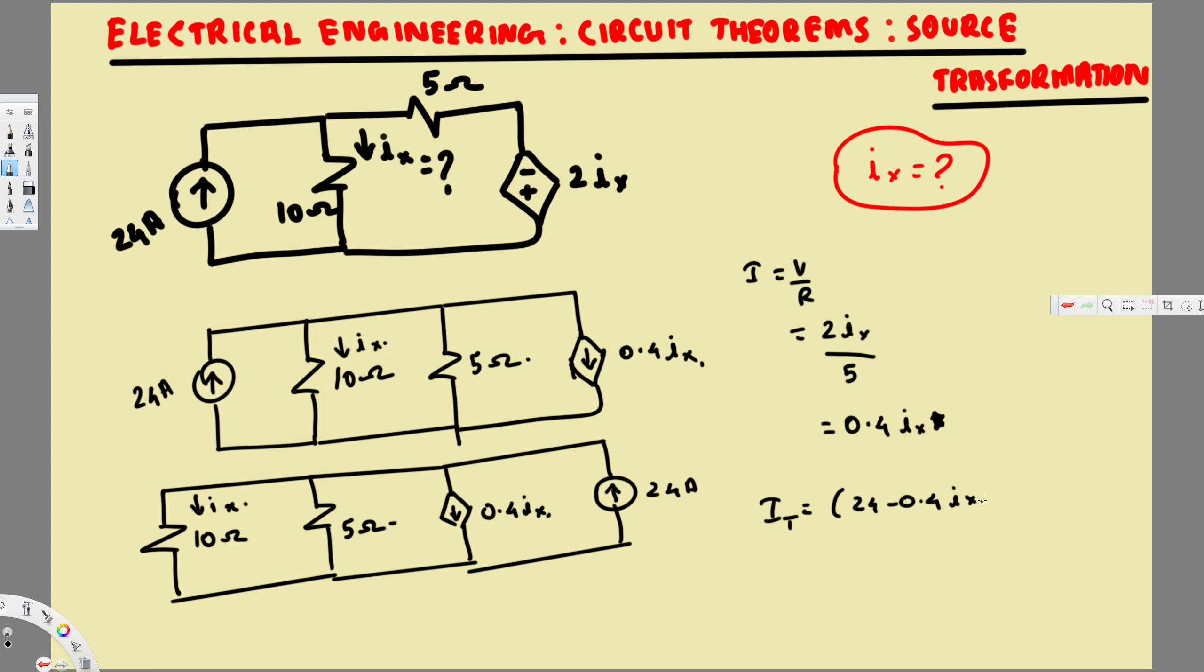We're trying to find this Ix value. To find this, since this is across 10 ohm resistance, Ix is going to be equivalent to I total times the other branch resistance over the addition of these two resistances.